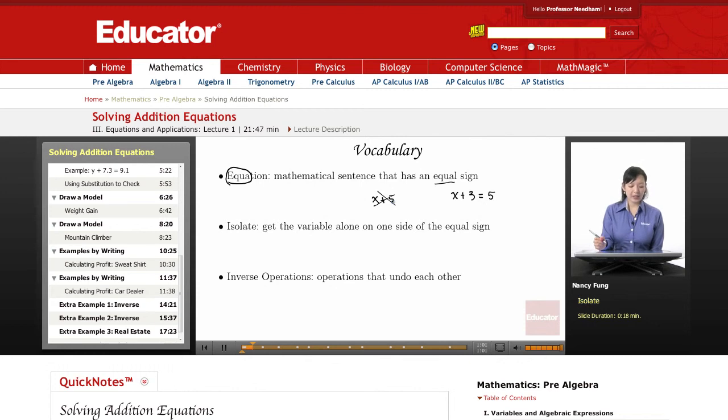So this would not be an equation because there is no equal sign. Isolate next means to get the variable alone on one side of the equal sign. Maybe you've heard on TV or something that when a person is in isolation, they are alone. So you can think that isolate means to get the variable alone.